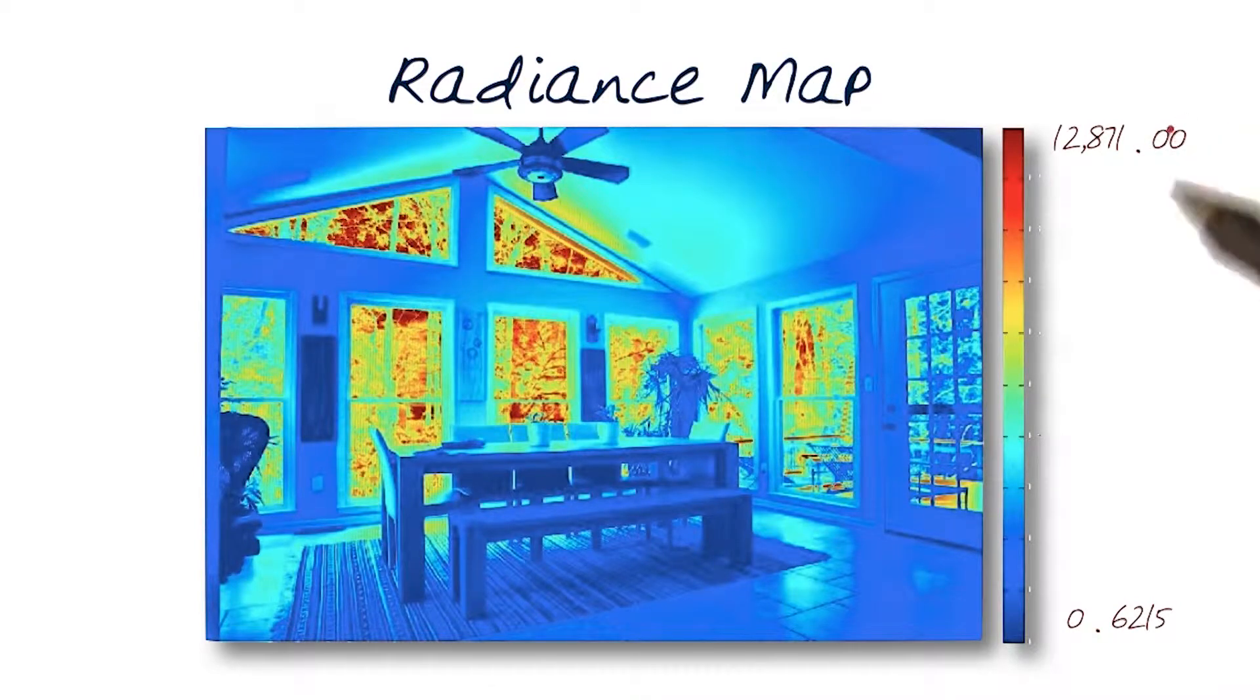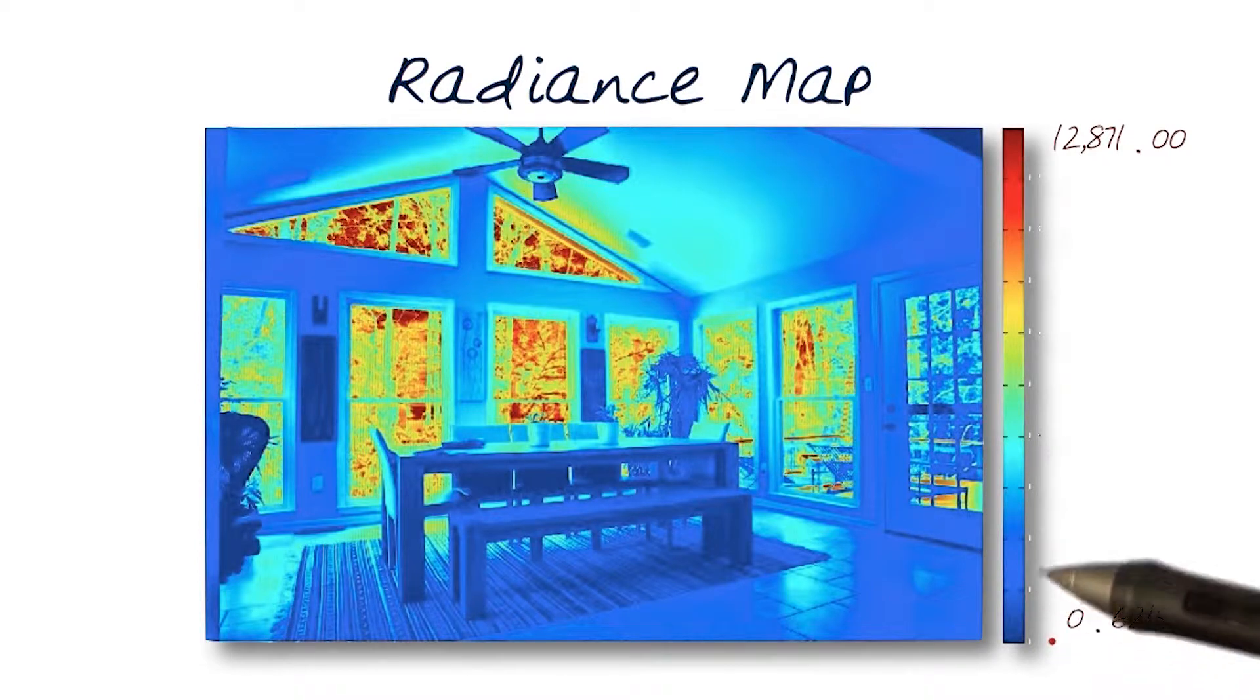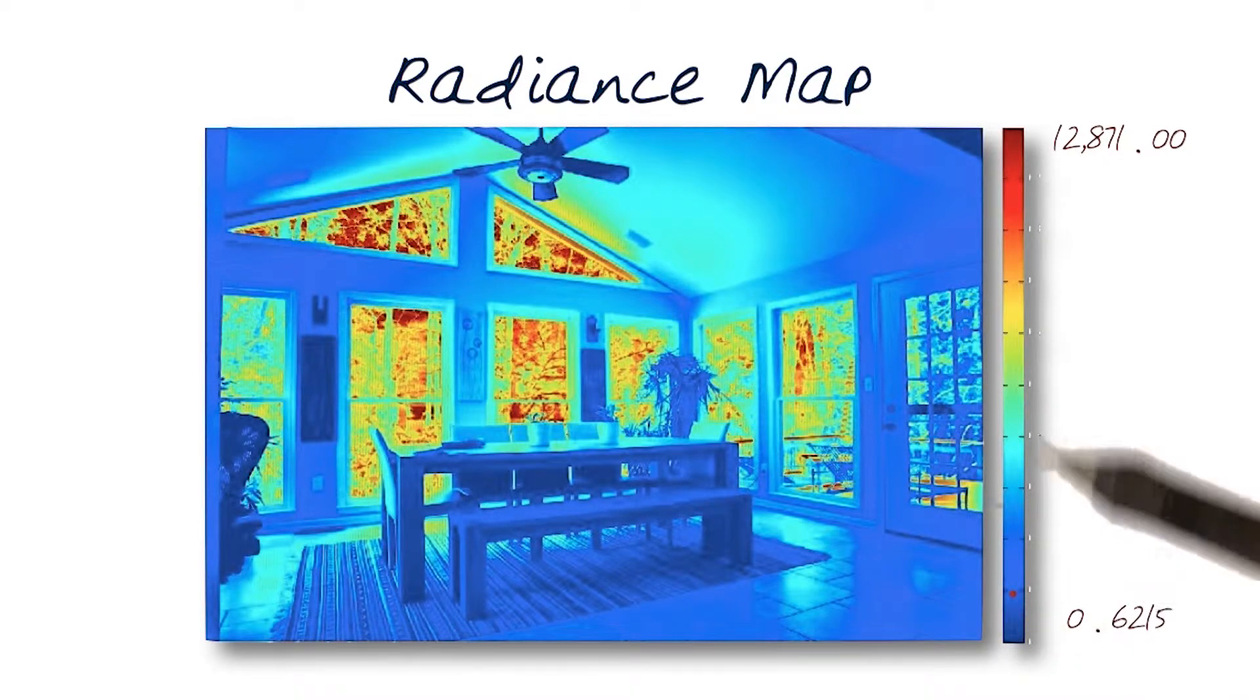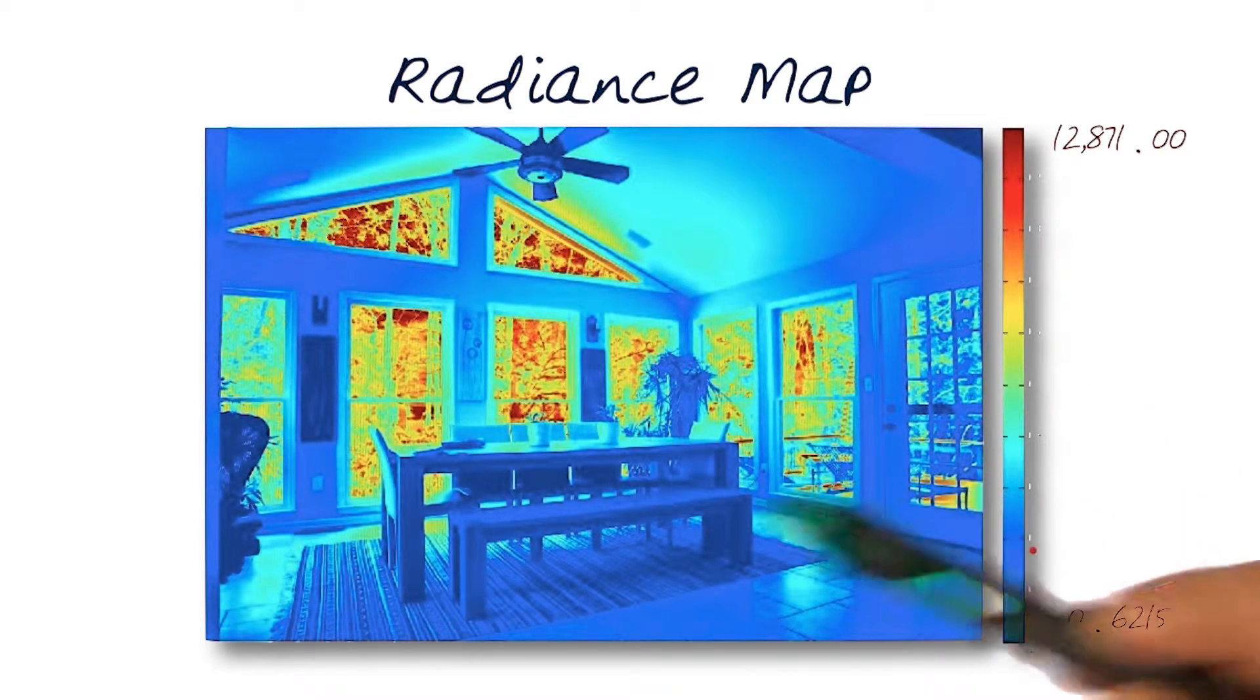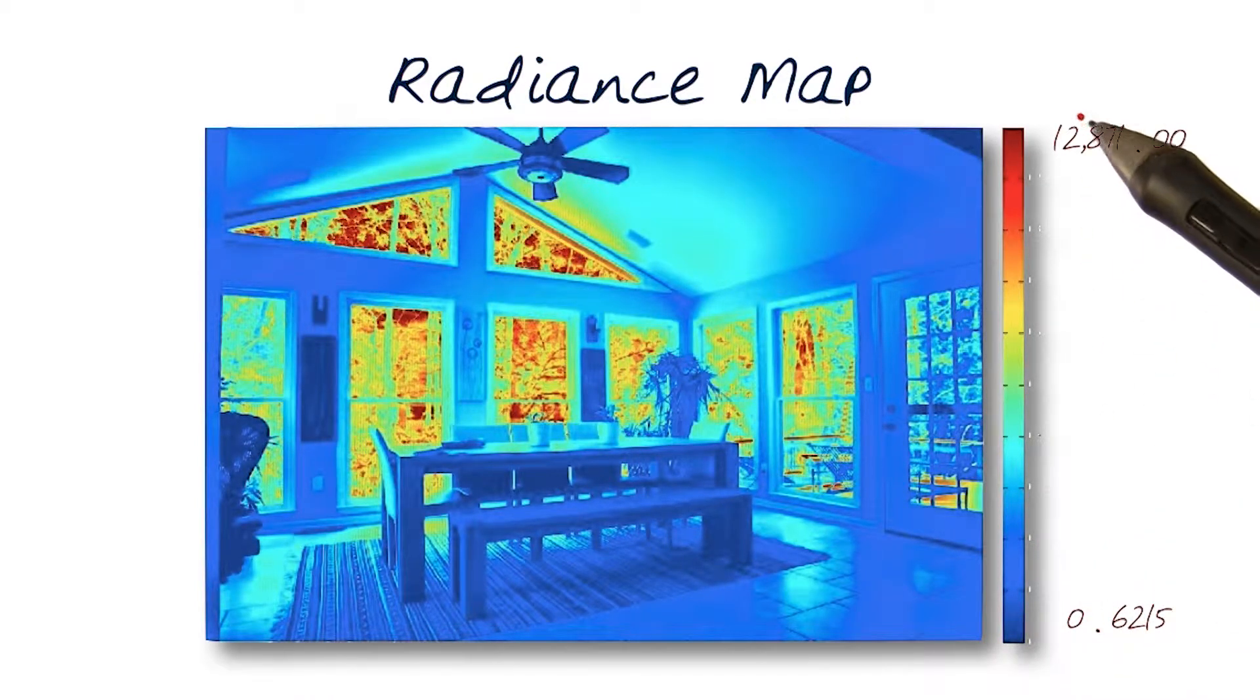This is a radiance map of the image we captured. What basically comes out now is we're no longer in the range of 0 to 255. This output shows that this image now has a range from 0.6215 to 12,871 intensity.